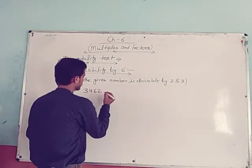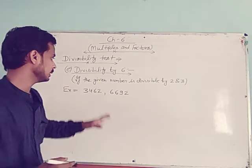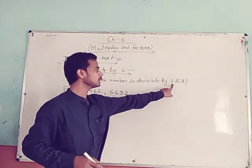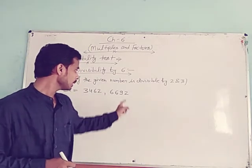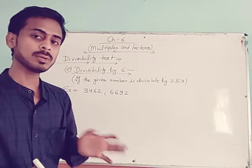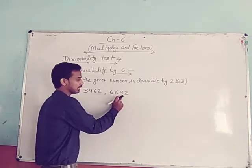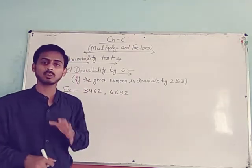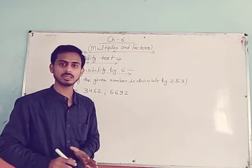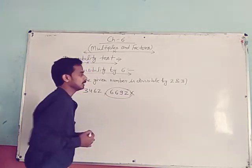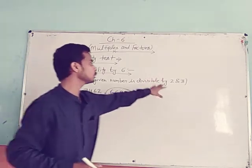See another example for 6: 6692. The last digit is 2, so it is divisible by 2. Now check for 3: sum of digits 6 + 6 + 9 + 2 = 23. Since 23 is not divisible by 3, this number is not divisible by 6. It is clear that a number must be divisible by both 2 and 3 to be divisible by 6.